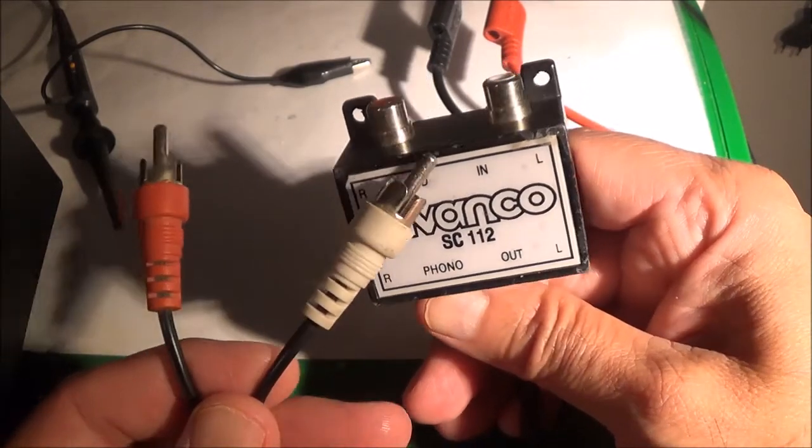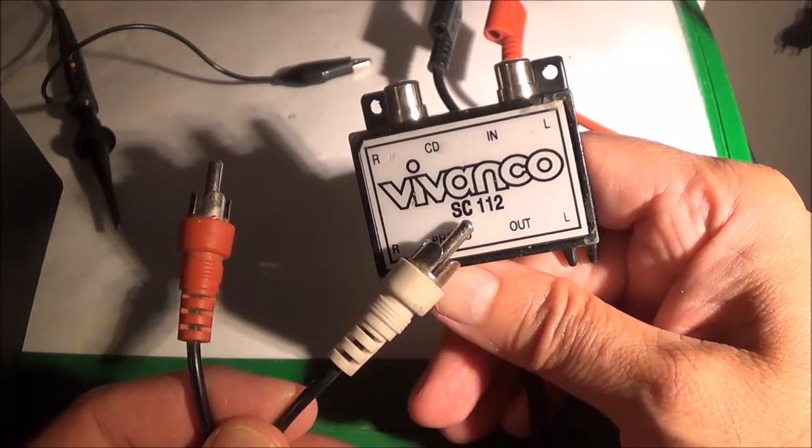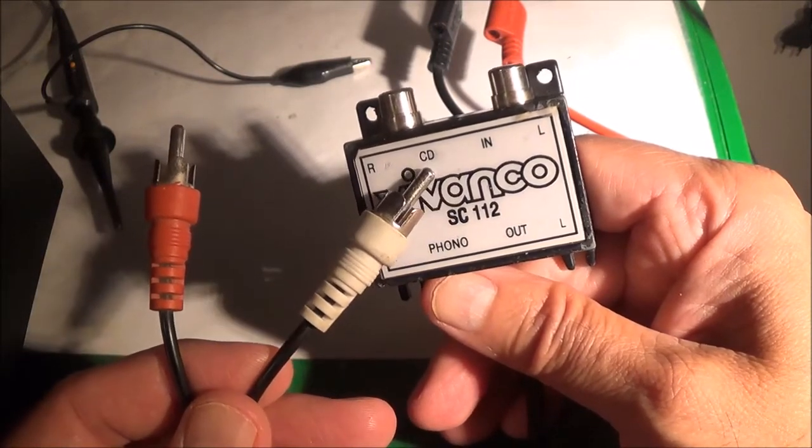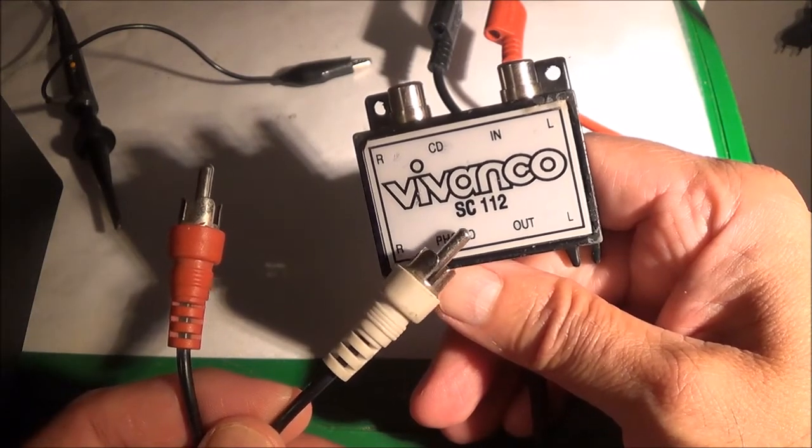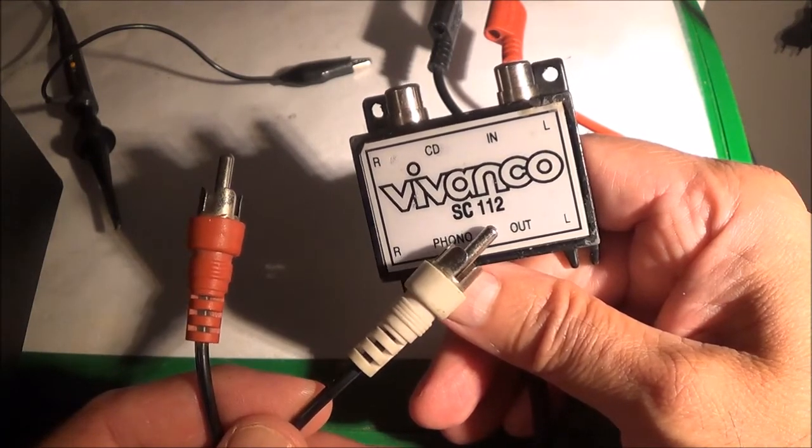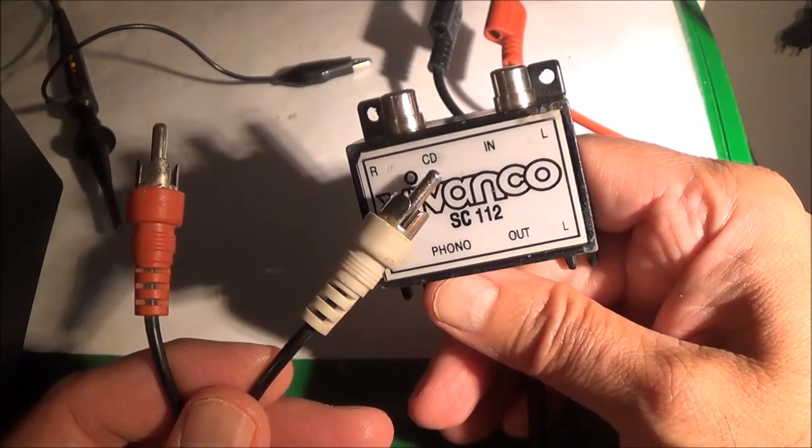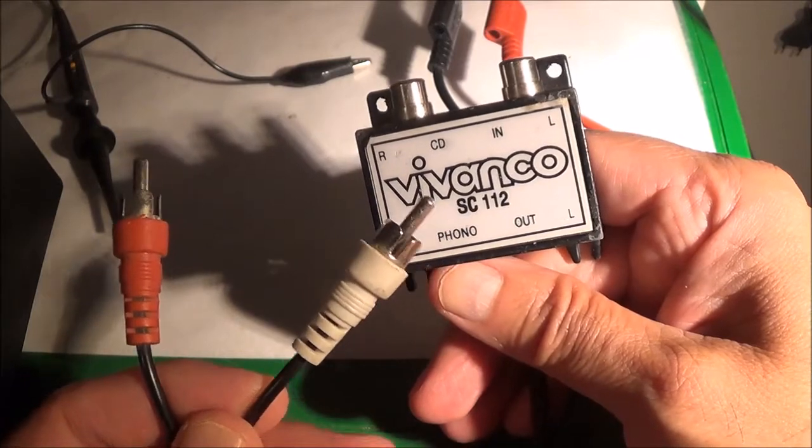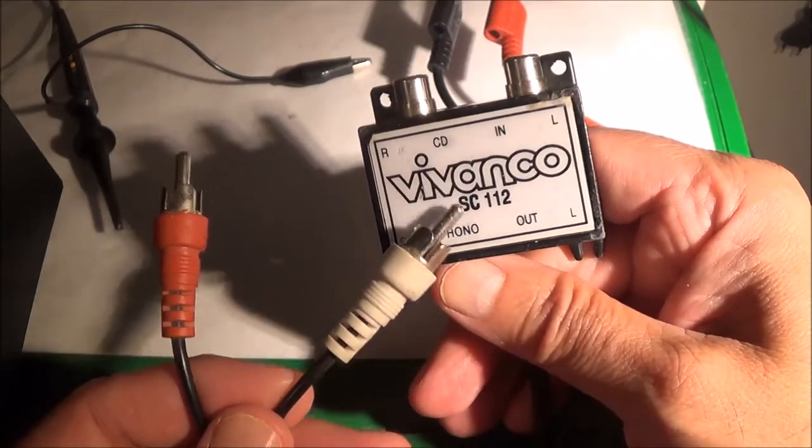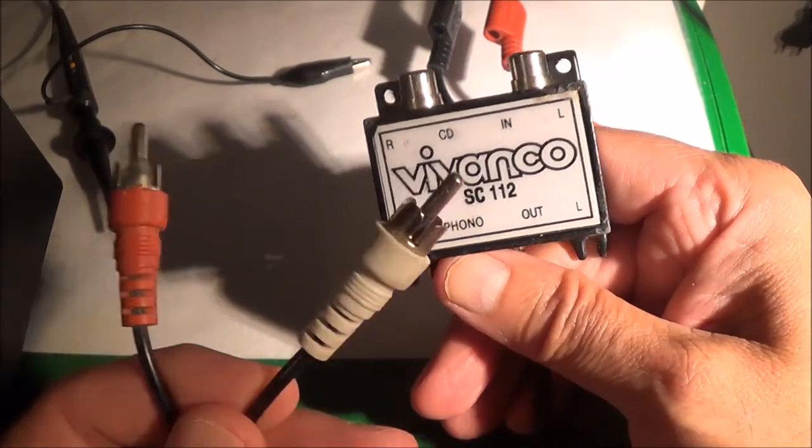What this thing does is it attenuates the signal because your phono circuit in your radio or stereo cassette recorder is not going to be able to handle such a high-level signal coming direct from the CD player. You're going to overload it, so this attenuates the signal and makes it lower.